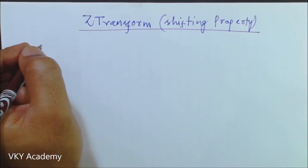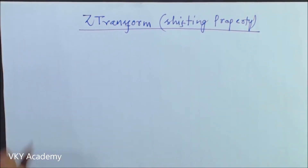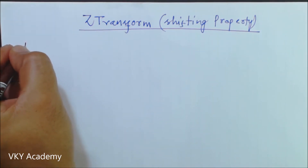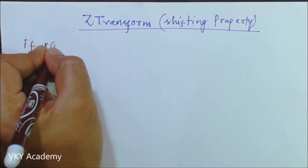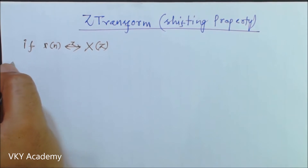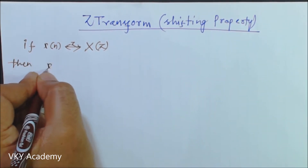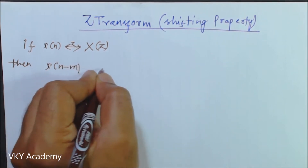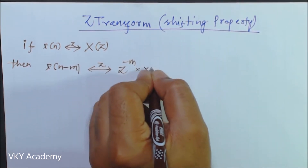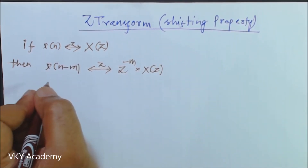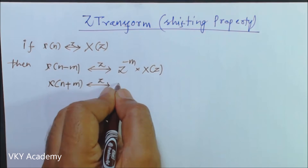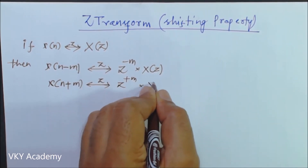Hello everyone. Today we will discuss the shifting property of Z transform. The shifting property states that if the Z transform of x of n is X of z, then the Z transform of x of n minus m will be z to the power minus m into X of z, and the Z transform of x of n plus m will be z to the power plus m into X of z.